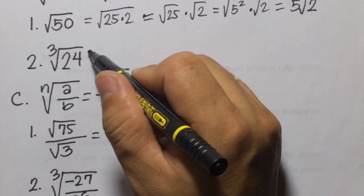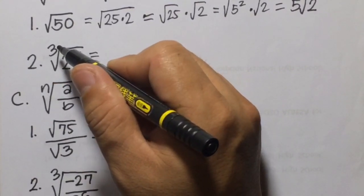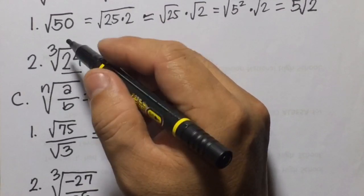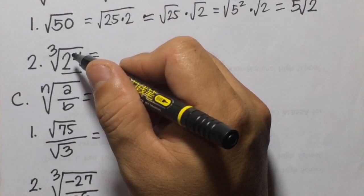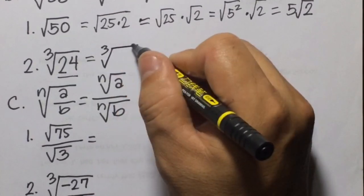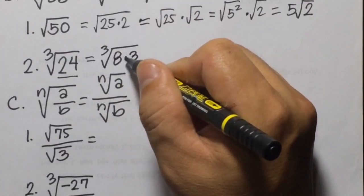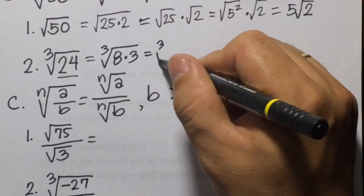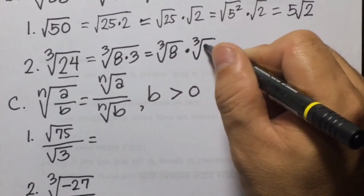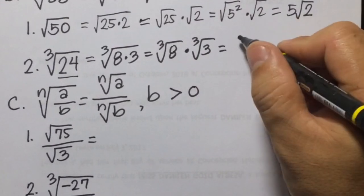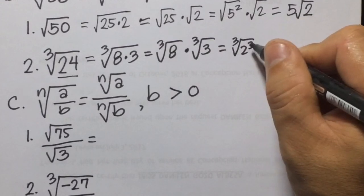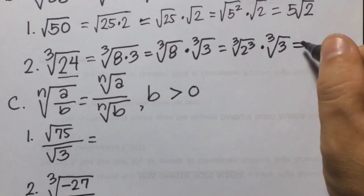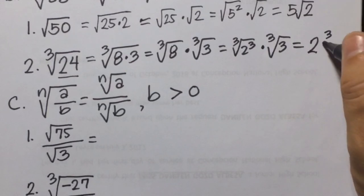Number 2: cube root of 24. This has index 3, so we find the factors of 24 where one is a perfect cube. We can write it as cube root of 8 times 3, since 8 is a perfect cube. This becomes cube root of 8 times cube root of 3. Cube root of 8 is cube root of 2 cubed, which equals 2. So the answer is 2 times the cube root of 3.